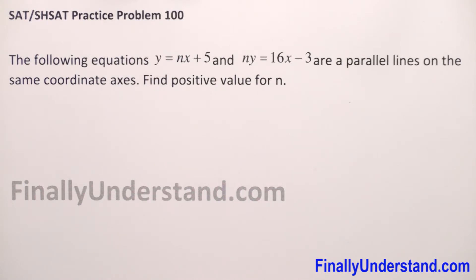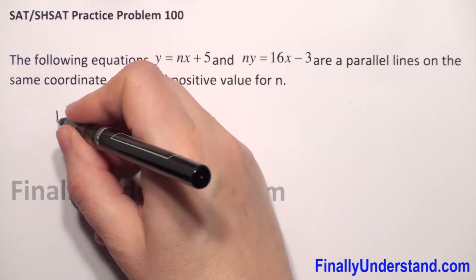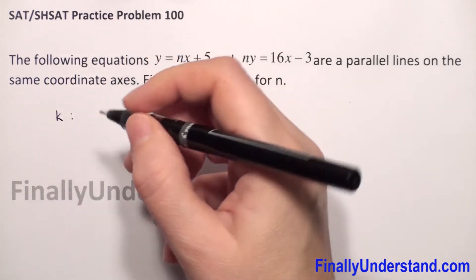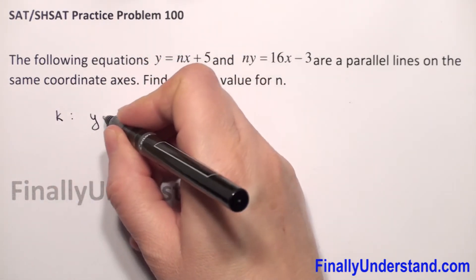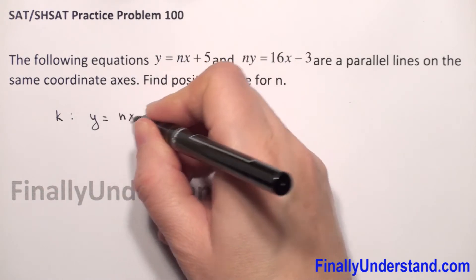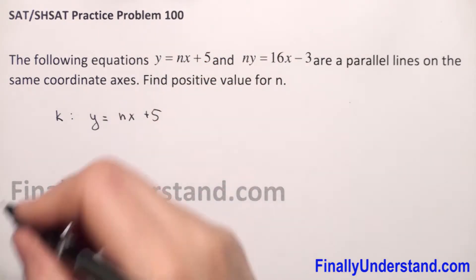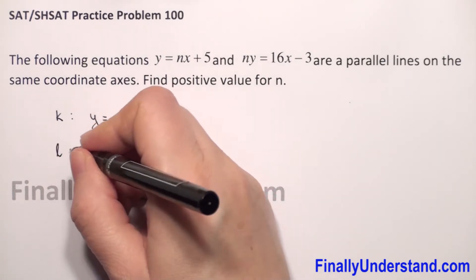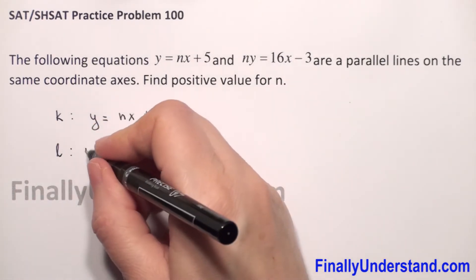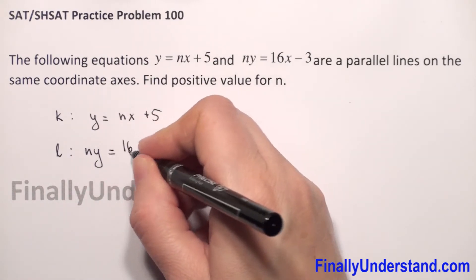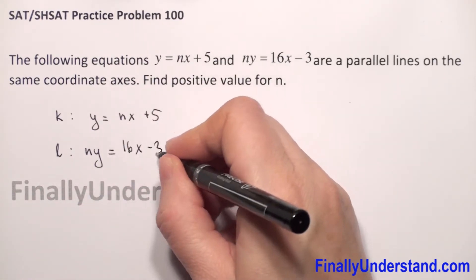We have two given lines. Let's say the first line k has equation y = nx + 5. The second line l has equation ny = 16x - 3.